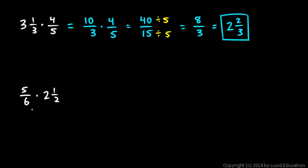Okay, another example, 5 sixths times 2 and a half. Let's rewrite this as one fraction times another. So we'll take the 2 and a half and convert it to an improper fraction. 5 sixths stays the same times, then instead of writing 2 and a half here, I'll think 2 times 2 is 4, plus 1 is 5, over 2.